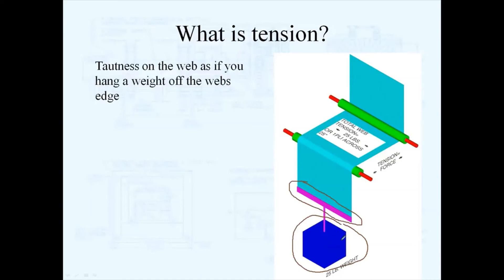This is a very simple case. If you were to take a 25-pound weight and hang it off the edge of your material, you would have 25 pounds of tension in the machine direction. So when we talk about tension, that's exactly what we're referring to.